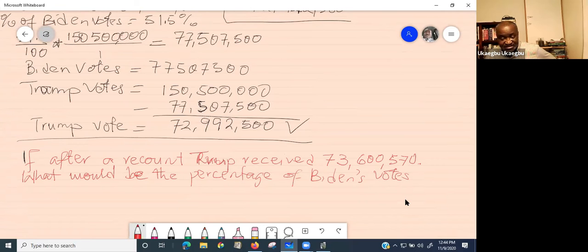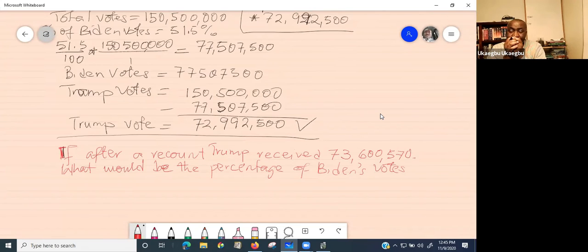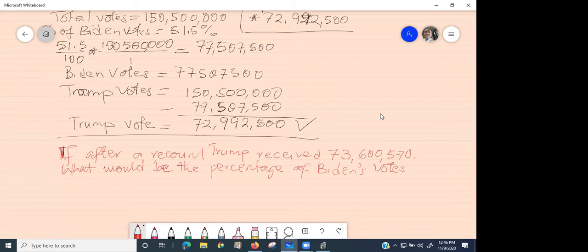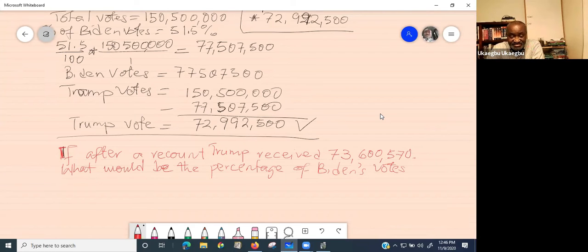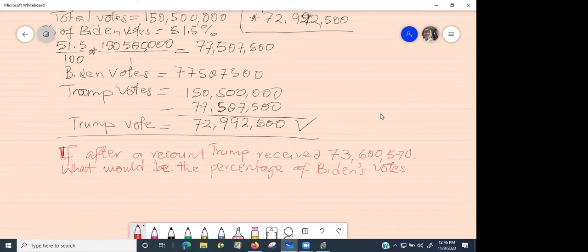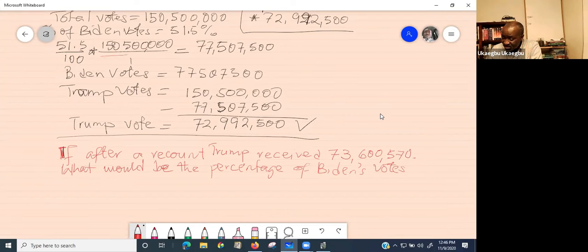If Trump is gaining on a recount, that means the total number of Biden's votes will be decreasing. And once you have a decrease, the percentage will also be decreased, or it can increase, depending on who the recount is favoring. Did everybody understand the question? How do you find percentage? Percentage is the number you are given divided by the total, multiply by 100.